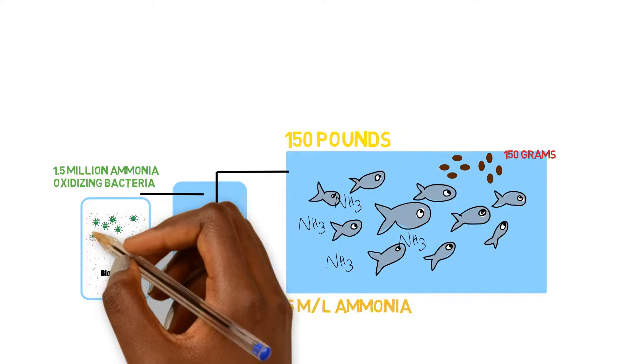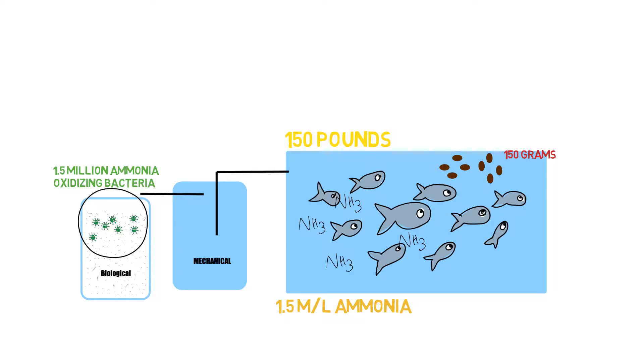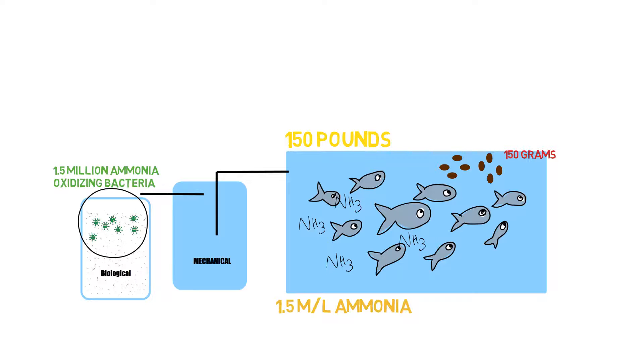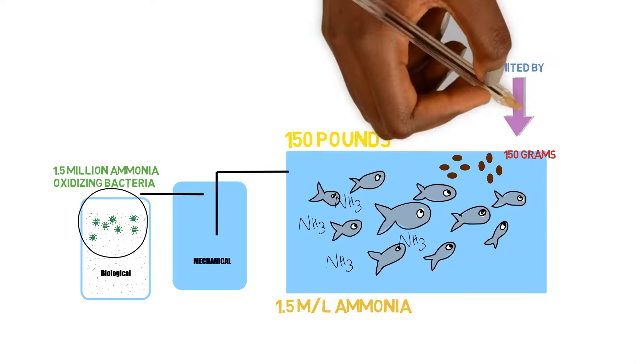So this is all you can get. It doesn't matter if you had a billion square feet of biological surface area. Their growth is limited to the amount of input that you supply in the system or that is produced out of the system. So there's no way to oversize the biological surface area.